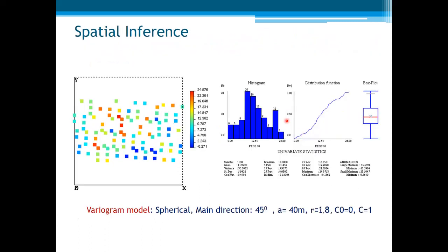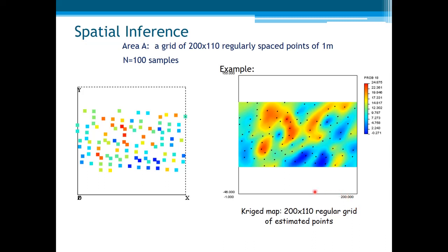Suppose we have another set of samples, here at these locations, with these statistics — we will come back to those statistics later. The variogram model is a spherical model, with main direction at 45 degrees, a range of 40 meters — just to compare, the x-distance here is 200 meters, so this is one-fifth of that distance. It is anisotropic with a 1.8 anisotropy ratio, and no nugget with a sill of 1. The Kriging estimator was applied to the whole area, resulting in a 2D grid of 200 by 110 regularly spaced points of 1 meter.